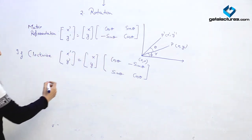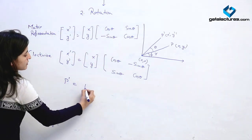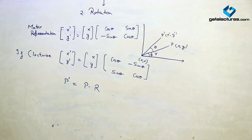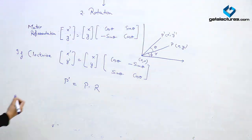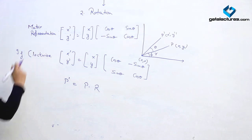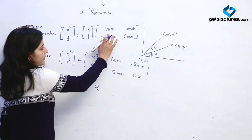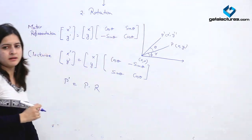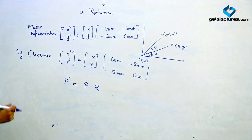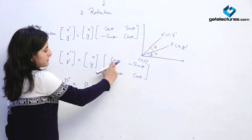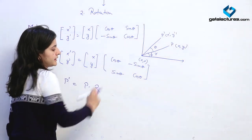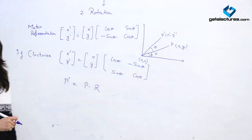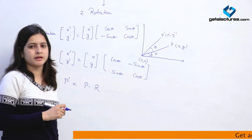In general, we can write P dash equals P dot R, where R is the rotation matrix. For counter-clockwise rotation, the value of R is [cos theta, sin theta; minus sin theta, cos theta]. This is the rotation transformation.